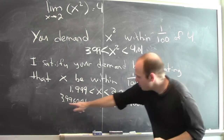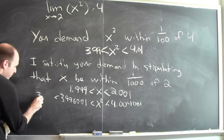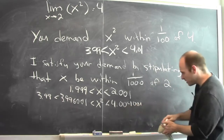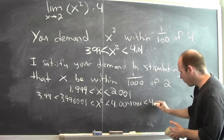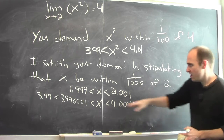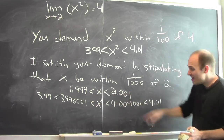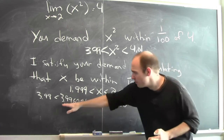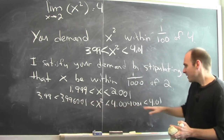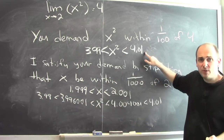Looking at these numbers: 3.996001 is bigger than 3.99, and 4.004001 is smaller than 4.01. So if x is within a thousandth of 2 — meaning x is between 1.999 and 2.001 — then x squared is between 3.996001 and 4.004001, which means x squared is between 3.99 and 4.01. That is exactly what you demanded.